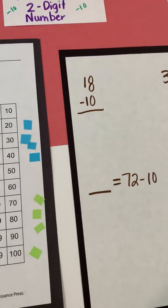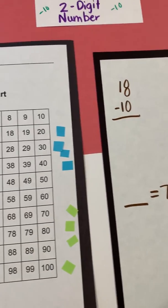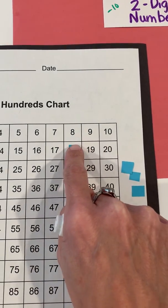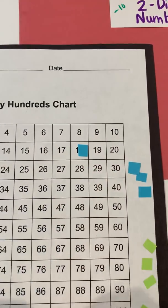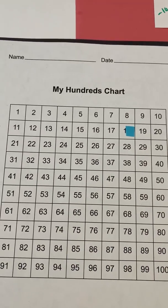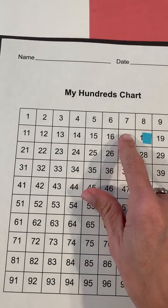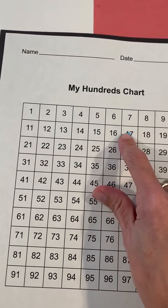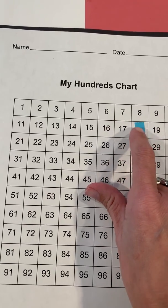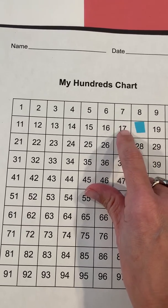So we're going to start off with 18 minus 10. I'm going to use my little blue piece of paper here to represent, to put on 18. Now we are going to subtract 10. So I want you to watch me as I do this. So I'm going to subtract. Remember when we subtract, we have to jump off the number. I cannot just count one, two, three back.